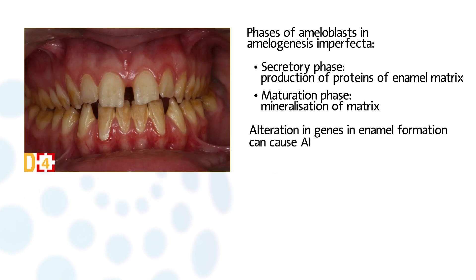Alterations in more than 70 genes coding for proteins involved in enamel formation can result in amelogenesis imperfecta, a heterogeneous group of rare diseases.